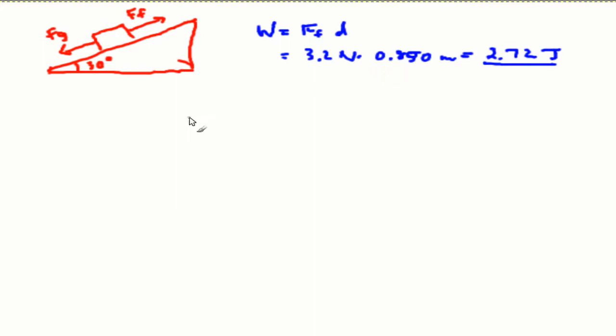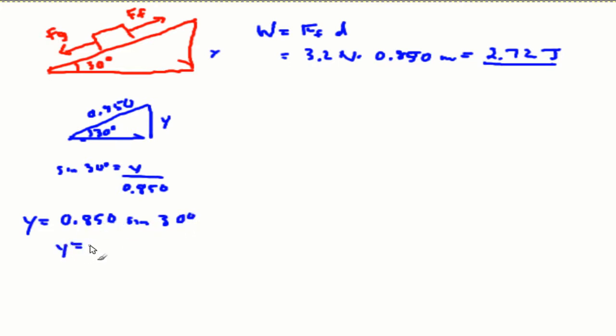Next step is we need to determine this vertical distance. So I'm going to draw another triangle. That's 30 degrees. We know that this distance on the incline is equal to 0.85. Therefore using trig function we're going to find the value of y. So sin of 30 degrees is going to be equal to y over the hypotenuse, which is 0.850. So y will be equal to 0.850 sin of 30 degrees. The vertical distance will be equal to 0.425.